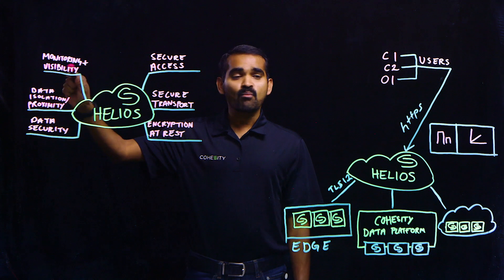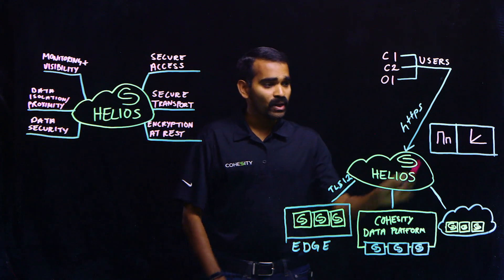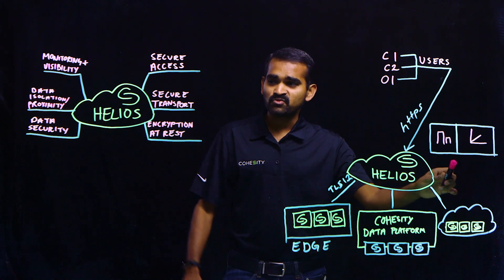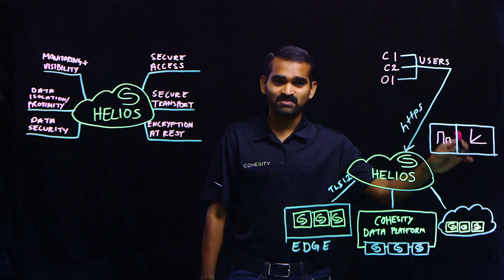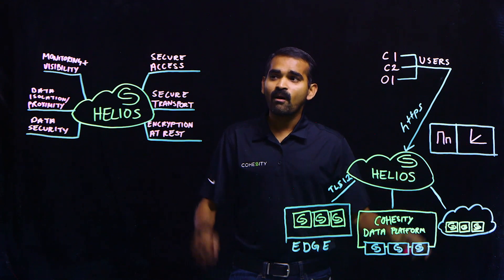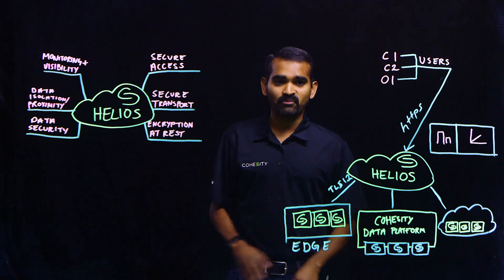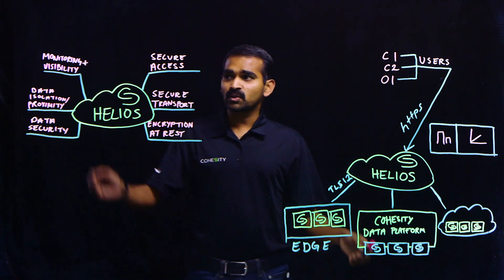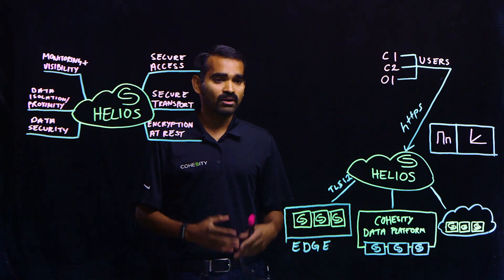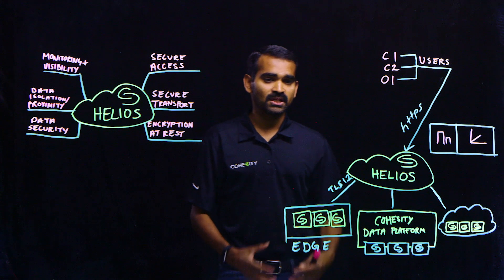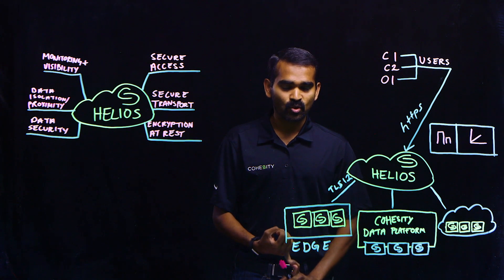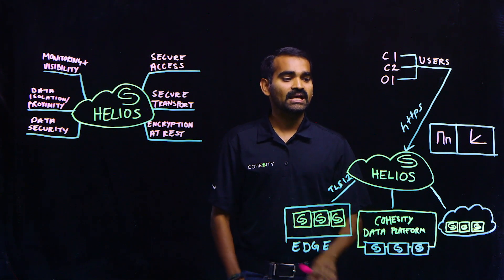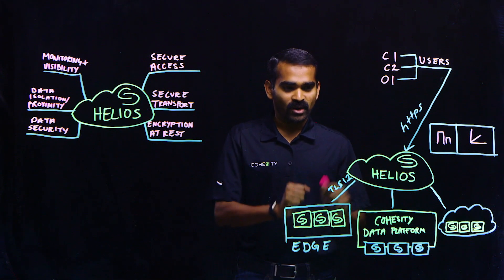The last layer is monitoring and visibility. It's very important as we build all these layers. We were very particular about this specific area — we have to monitor all these different levels of security we've built in the environment. Through this monitoring visibility, our Cohesity operations team monitors for rogue access, rogue connections, and any divergence in the Helios environment.